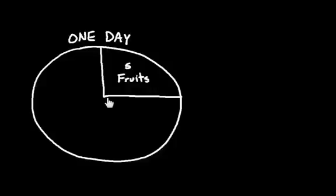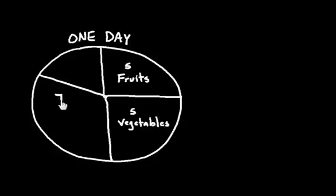So the DASH diet suggests that for me I should have about five fruits in a day and I should have five vegetables in a day. So a total of ten fruits and vegetables. And then on top of that, about seven grains, of which three are whole grains.